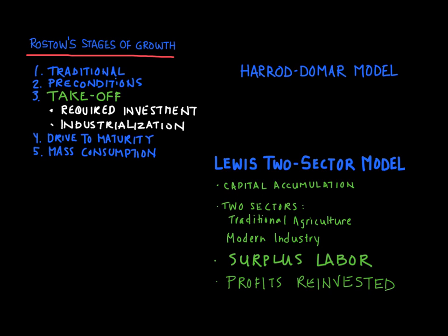We are interested in trying to explain the takeoff stage that Rostow had discussed. The first goal was to understand or explain how investment happens. The Harrod-Domar model provided the answer to that. The famous Harrod-Domar equation was that the change in output was equal to the net national savings rate divided by the capital output ratio. If we had depreciation, we might add that as well. Basically, Harrod-Domar said if you want to grow, all you needed to do was to save. And if you didn't save enough, foreign aid could fill that financing gap and help with growth as well.